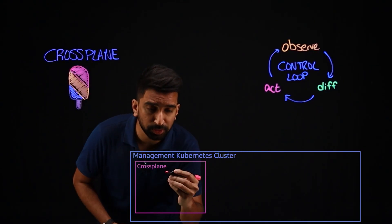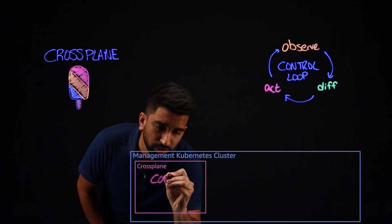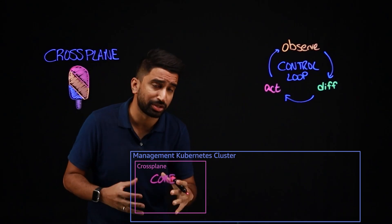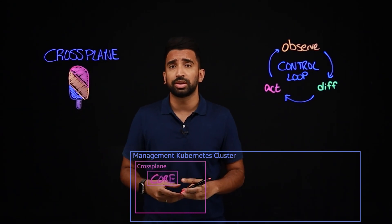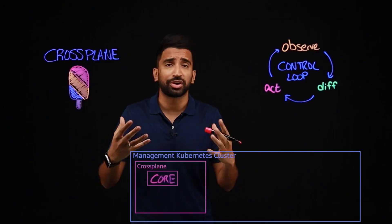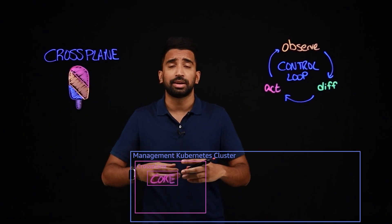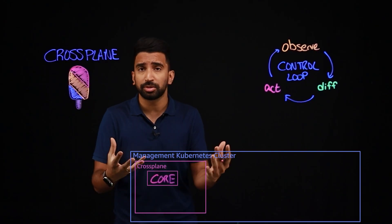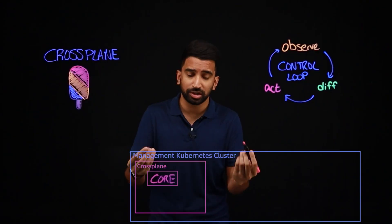Now, Crossplane comes with some core components — I'll sketch that out here as just "core". This will include things like CRDs, controllers, a workload scheduler, and some other components that are part of core Crossplane.